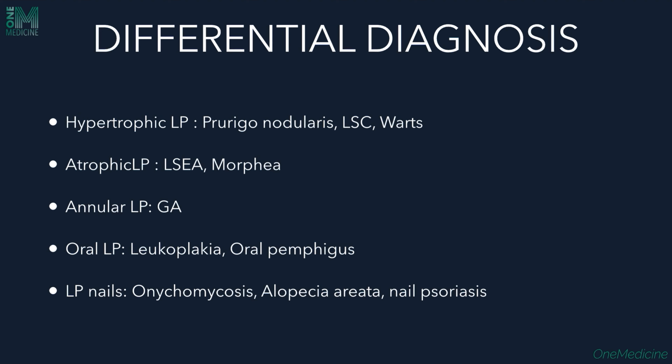Differential diagnosis depends on the type of Lichen Planus. Hypertrophic LP: prurigo nodularis, lichen simplex chronicus, and warts. Atrophic LP: lichen sclerosis et atrophicus and morphea. Annular LP: granuloma annulare. Oral LP: leukoplakia and oral pemphigus. Nail LP should be differentiated from onychomycosis, alopecia areata, and nail psoriasis.